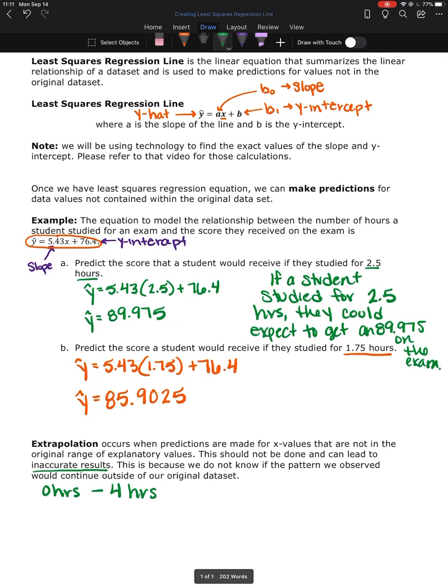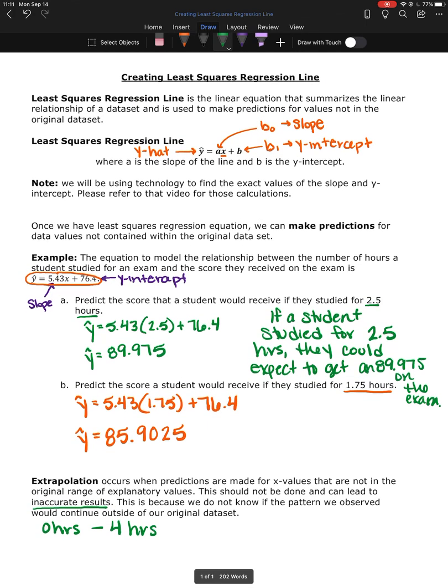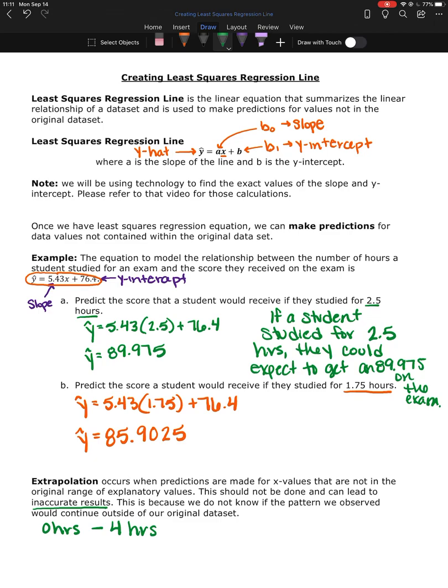So you just want to be careful about what types of values you're making predictions for. So this is what the least squares regression line looks like and how you can use it to make predictions for values that were not included in your data set, but were still within that original range.